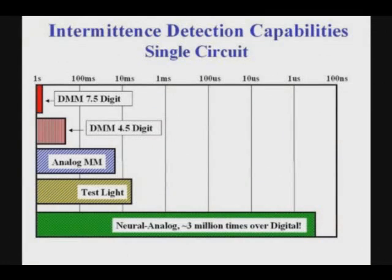This chart shows the intermittent detection capabilities of a variety of commonly used test and diagnostic devices when testing just a single circuit. As shown, digital devices, with all their measurement averaging employed to achieve phenomenal measurement accuracy, are practically blind to intermittent events.